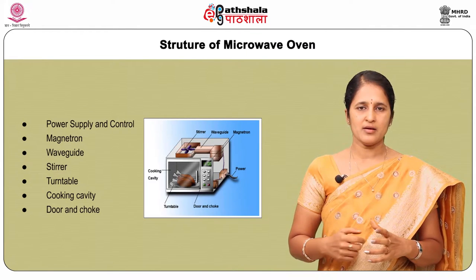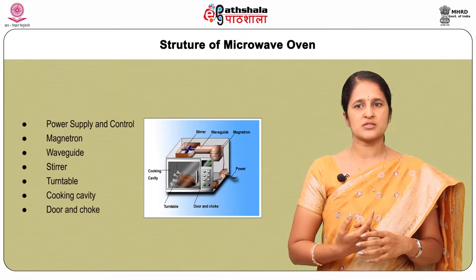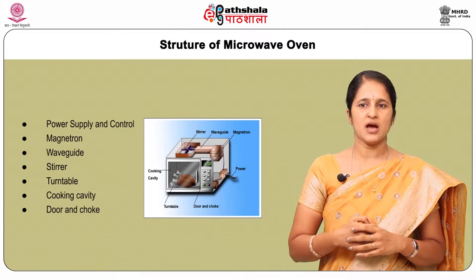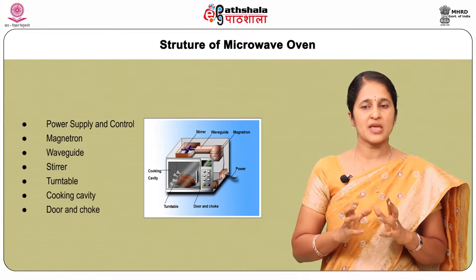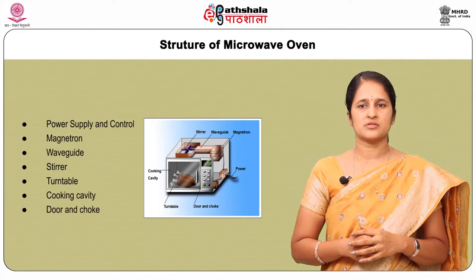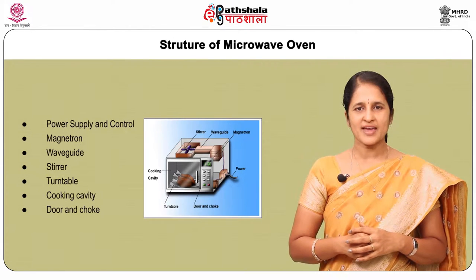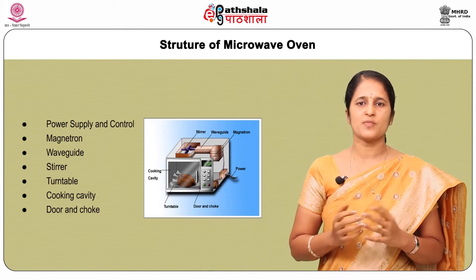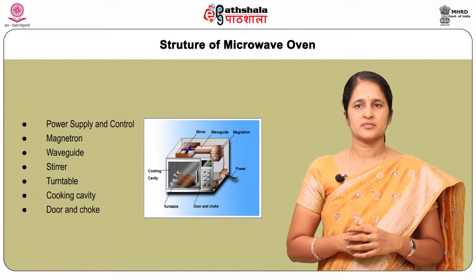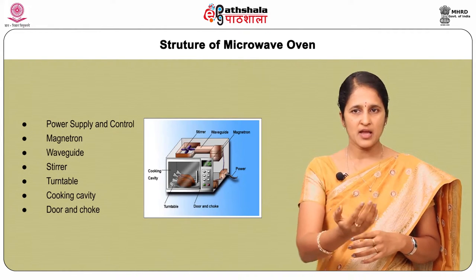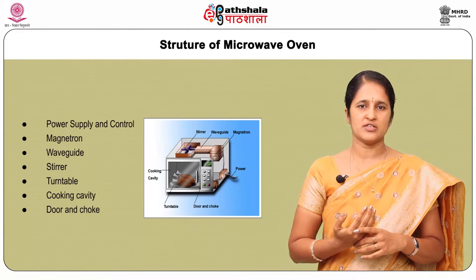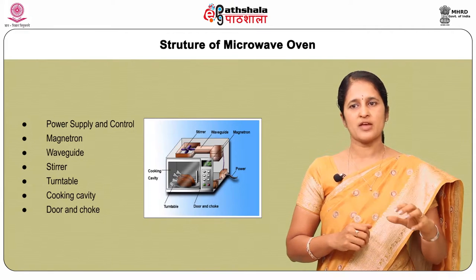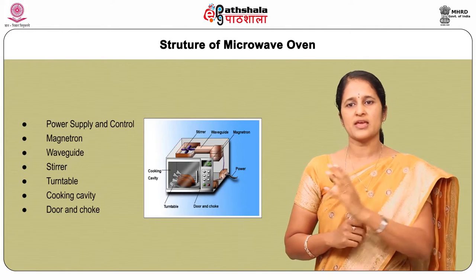The stirrer is commonly used to distribute the microwaves from the wave guide to allow more uniform heating of food. The turntable rotates the food through the fixed hot and cold spots inside the cooking cavity, allowing food products to be evenly exposed to the microwaves. The cooking cavity is the space inside where the food is heated when exposed to microwaves. The door and choke allow entry of food to the cooking cavity and are designed to prevent microwaves from leaking between the door and the cooking cavity.